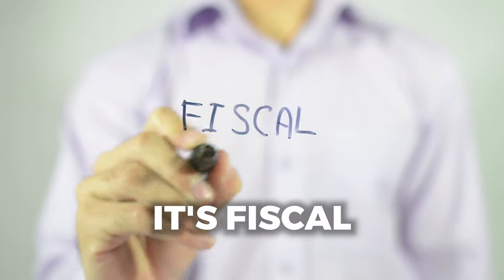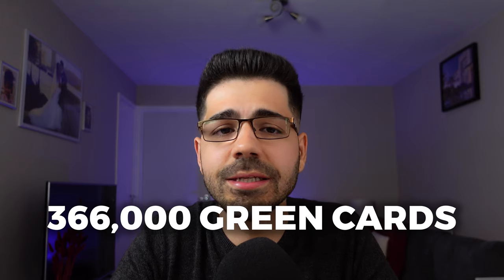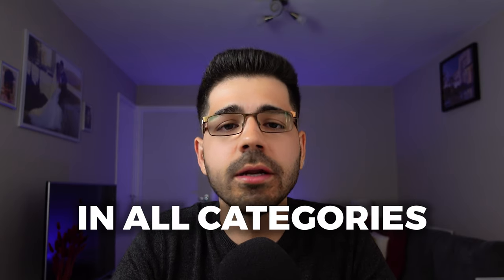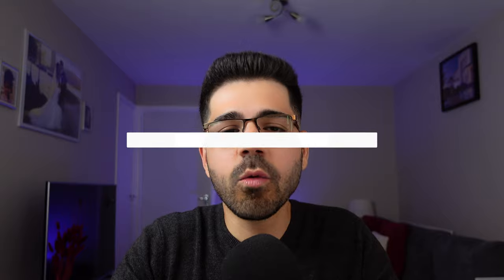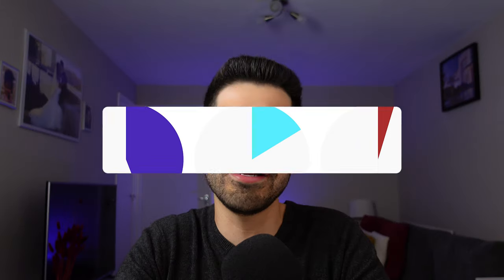Each fiscal year in the US — from October 1st to September 30th of the following year — approximately 366,000 green card visas are issued across all categories, with 140,000 reserved for employment-based visas. That means visas starting with the letters EB. From those 140,000, only 40,000 are for EB-3 visas, and from those 40,000, only 10,000 are for the EB-3 skilled worker visa.